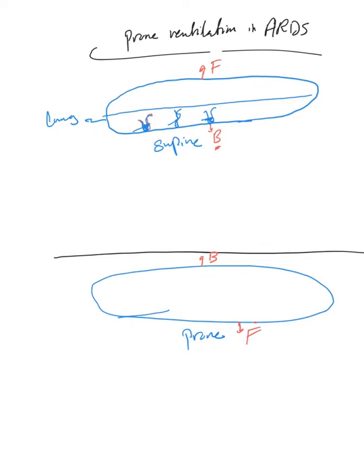There is a huge VQ mismatch in that lower area, while the majority of oxygenation happens in the upper half because there is less VQ mismatch there — most of the fluid goes to the lower half due to gravity. So you have more healthier alveoli in the upper half. Basically, what you try to do is reverse this process.